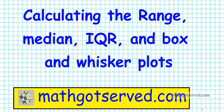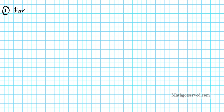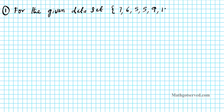So let's go ahead and take a look at a question. Let's write it down — question number 1: for the given data set, let's say the data set is 7, 6, 5, 5, 9, 10, 11, 10, 9.